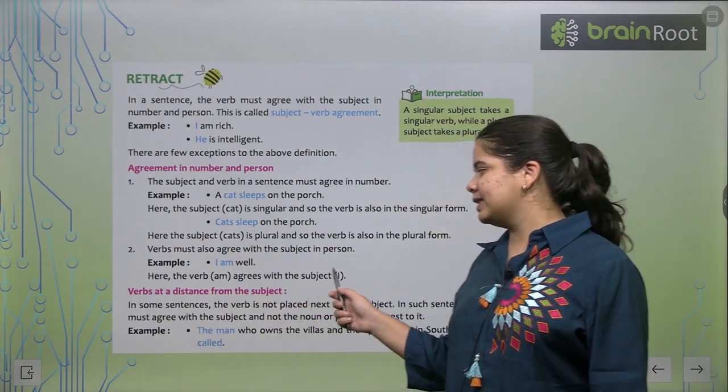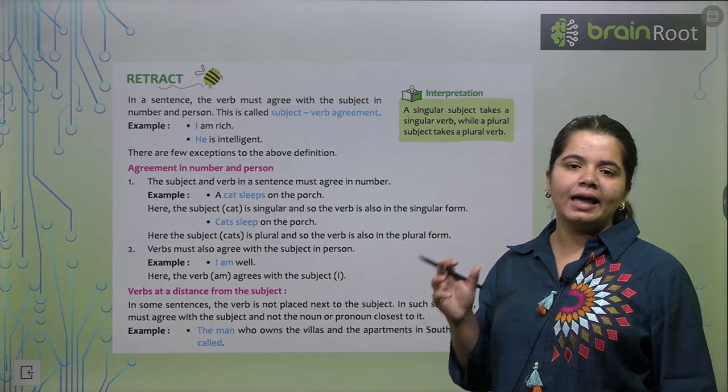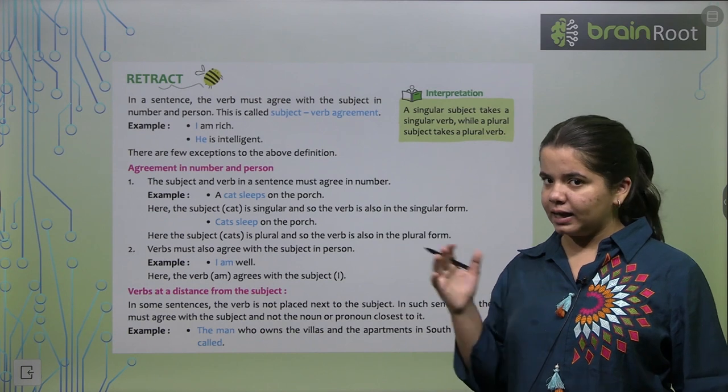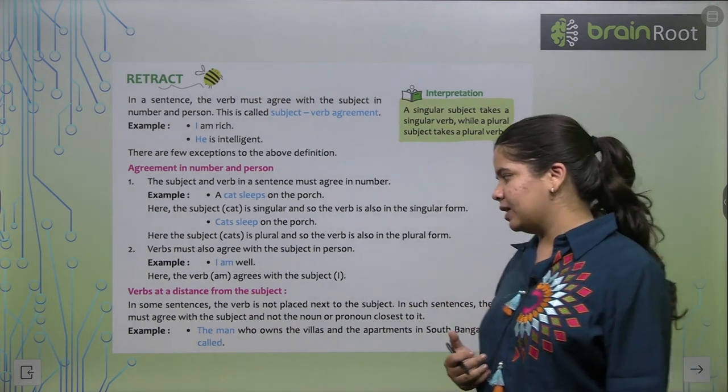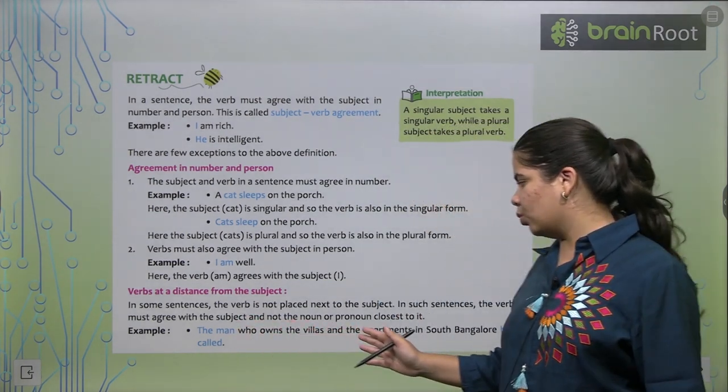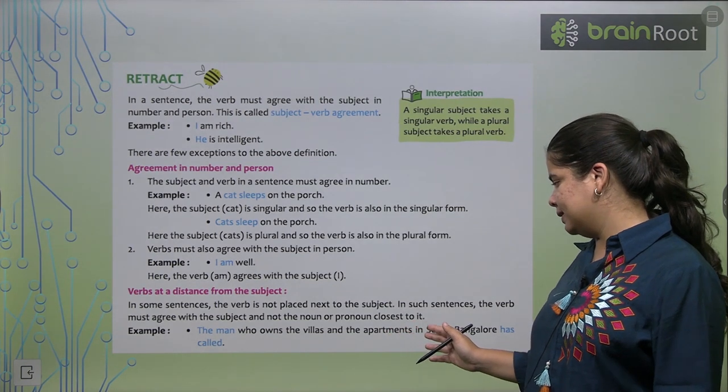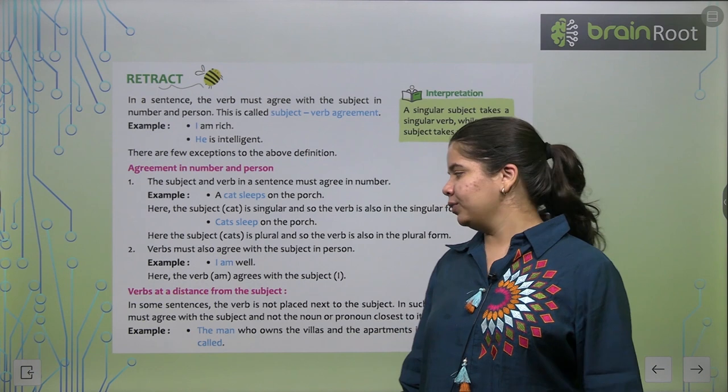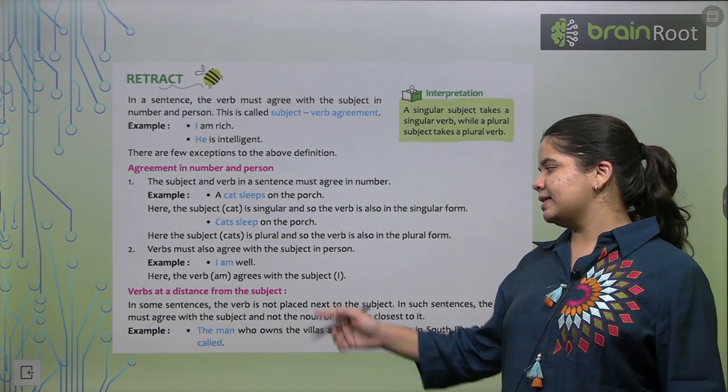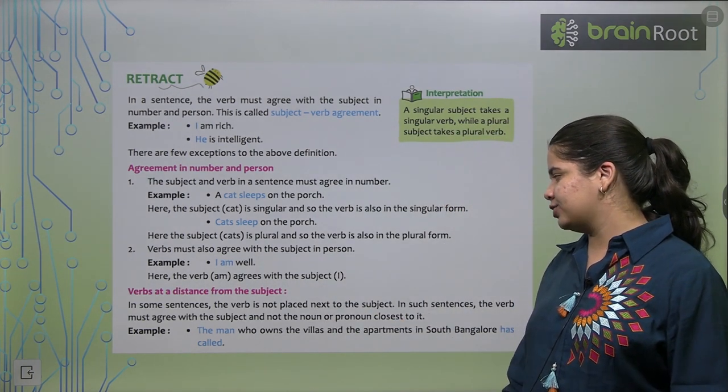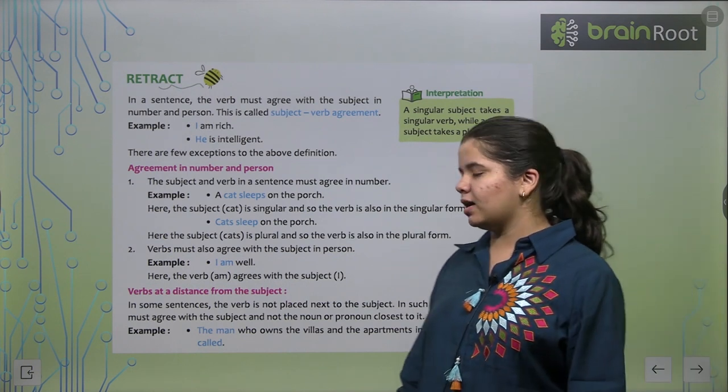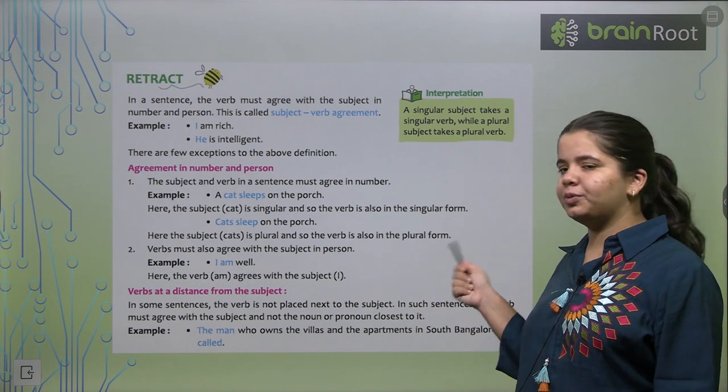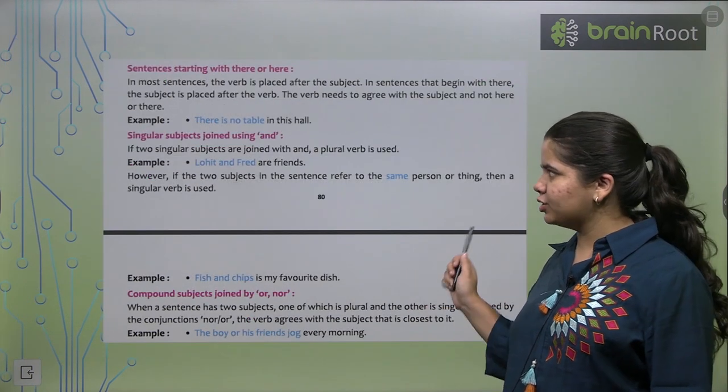Verbs must also agree with the subject in person. I am well. I ke saath hamesha am use hota hai. Is, are nahi hota hai. Here, the verb am agrees with the subject I. The man who owns the villas and the apartments in South Bangalore has called. In some sentences, the verb is not placed next to the subject. In such sentences, the verb must agree with the subject and not the noun or the pronoun.